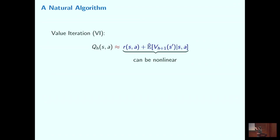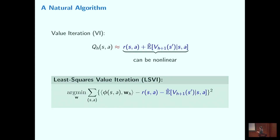To introduce that algorithm, we first recap the classical value iteration algorithm. It's basically the optimal Bellman equation, but instead of using exact expectation we use empirical expectation. In a function approximation setting this can be tricky because the right-hand side can be a non-linear function, so directly applying this update means our Q-value is no longer a linear function. A natural idea: just do least squares. We parameterize our Q-value as a linear function in terms of feature phi, and perform a least squares update to get a new approximate Q-value.